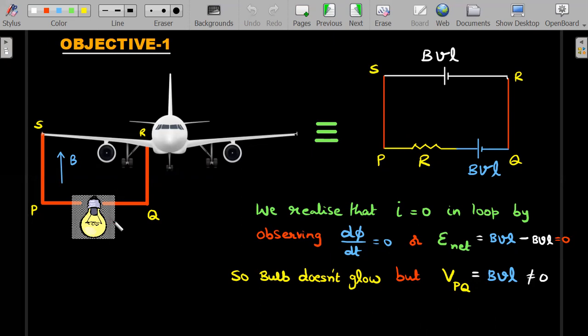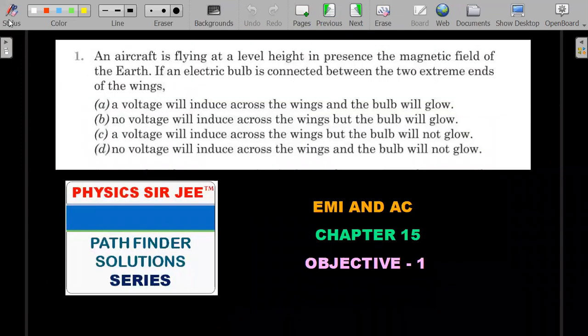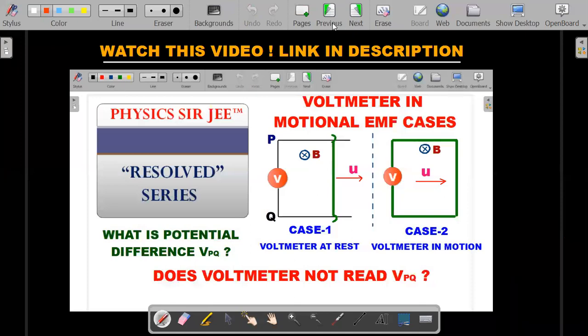Since the induced current is zero and no current passes through the bulb, the bulb will not glow. But the trick in this problem is that if you try to calculate the voltage induced across VPQ with no current through this, the answer is BVL. So the required solution, which should not surprise people who have watched my previous video on this, is that the voltage will induce but the bulb will not glow. That's a nice combination.